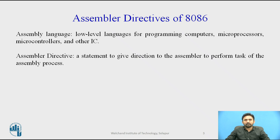Assembly programming consists of two types of statements: instructions and directives. Instructions are translated to machine code by the assembler, but directives are not translated to machine codes.